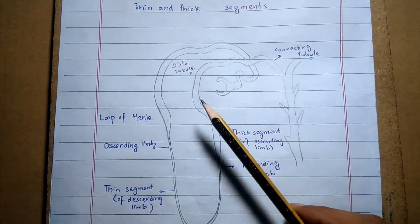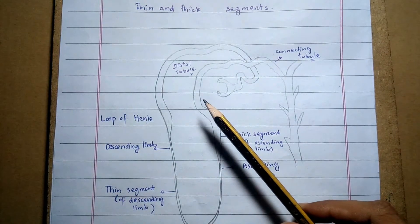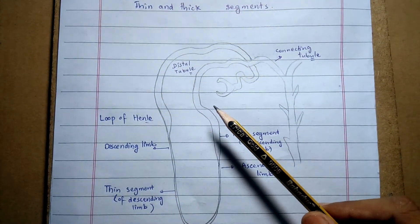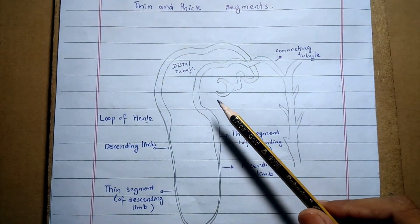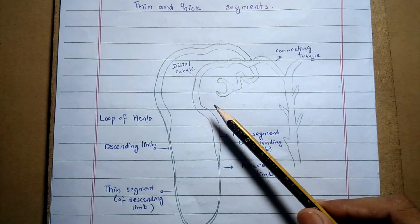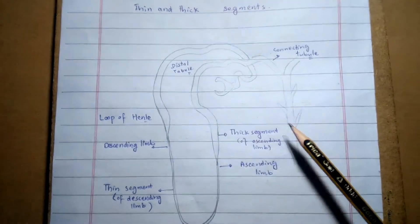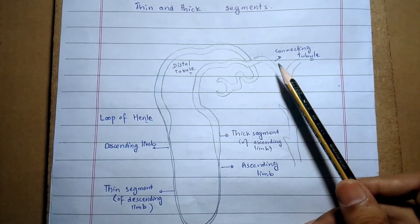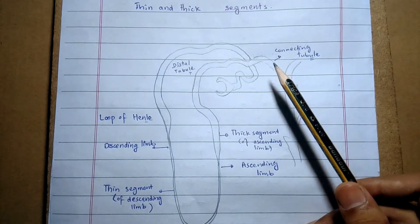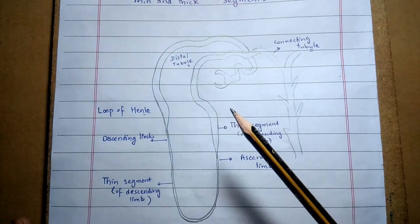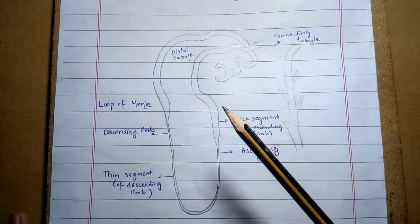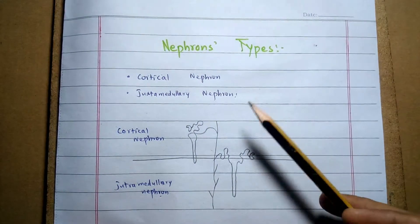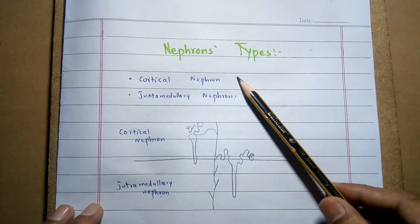Then the distal tubule. The loop of Henle ends in the distal tubule, which leads to the collecting duct by forming the connecting tubule. So this is the tubular system of the nephron.